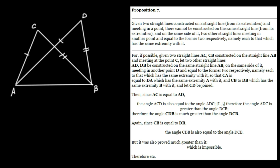What he's saying is that it is not possible to build this such that AD is equal to AC and that DB is equal to CB. This other triangle must have sides which are different. We're going to attempt to show that this construction is absurd — it can't be done. For if possible, given two straight lines AC and CB constructed on the straight line AB, meeting at point C, let two other straight lines AD and DB be constructed on the same straight line AB, on the same side of it, meeting in another point D, and equal to the former two respectively, each to that which has the same extremity with it — so that CA equals DA and CB equals DB.